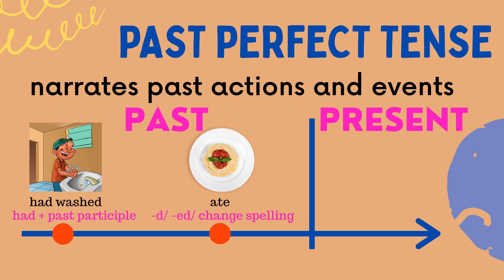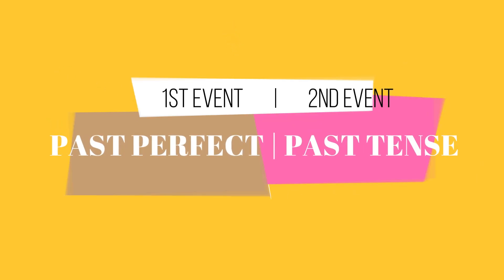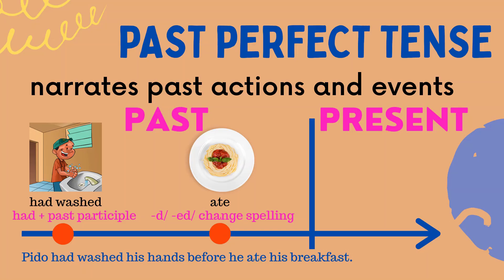Take a look at this example: 'Pido had washed his hands before he ate his breakfast.' In the given example, both actions happened in the past. However, one action took place before another one happened. In this context, the Past Perfect Tense portrays an earlier action before another action happens, as portrayed by the Simple Past Tense.